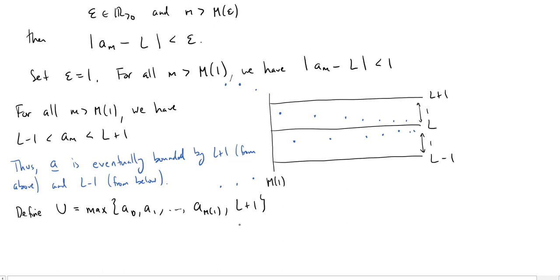So we're just going to take the biggest of all of these values, and we will then know that every term in A, well, we know once you get past m of 1, everything is less than L plus 1. But maybe one of these is bigger, or more than 1, but whichever one is the biggest, that will be an upper bound, if it was even bigger than the L plus 1 to begin with.